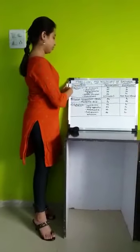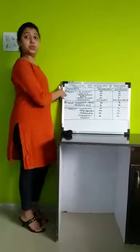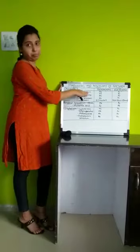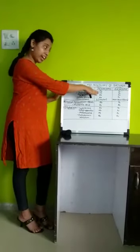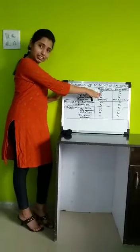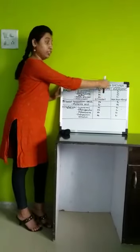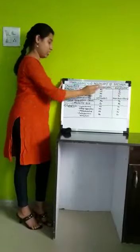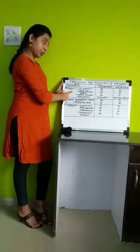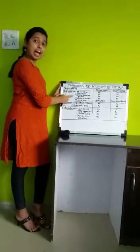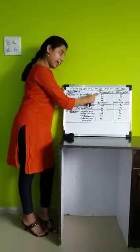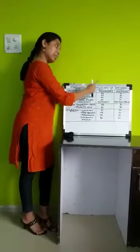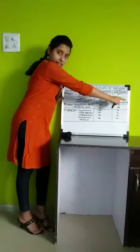The first difference is the nucleus. The nuclear membrane in prokaryotes is absent, while in eukaryotes the nuclear membrane is present. Nucleolus is absent in prokaryotes, while nucleolus is present in eukaryotes.